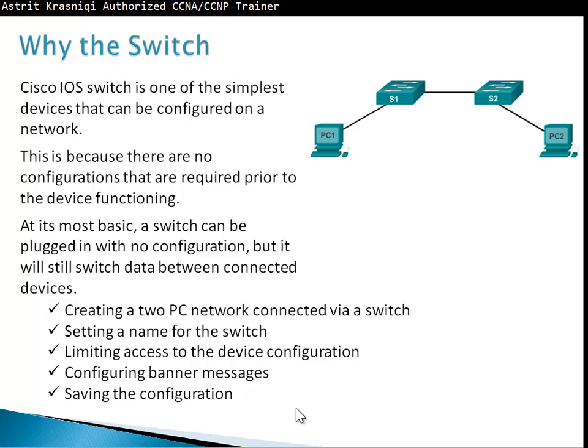Why the switch? A Cisco IOS switch is one of the simplest devices that can be configured on a network, because there is no configuration required prior to device functioning. At its most basic, a switch can be plugged in with no configuration and it will switch data between connected devices. For this demonstration, we're going to create a 2-PC network connected via switch, set the name for the switch, limit access to the device configuration, configure banner messages, and save the configuration. I will use Cisco Packet Tracer.